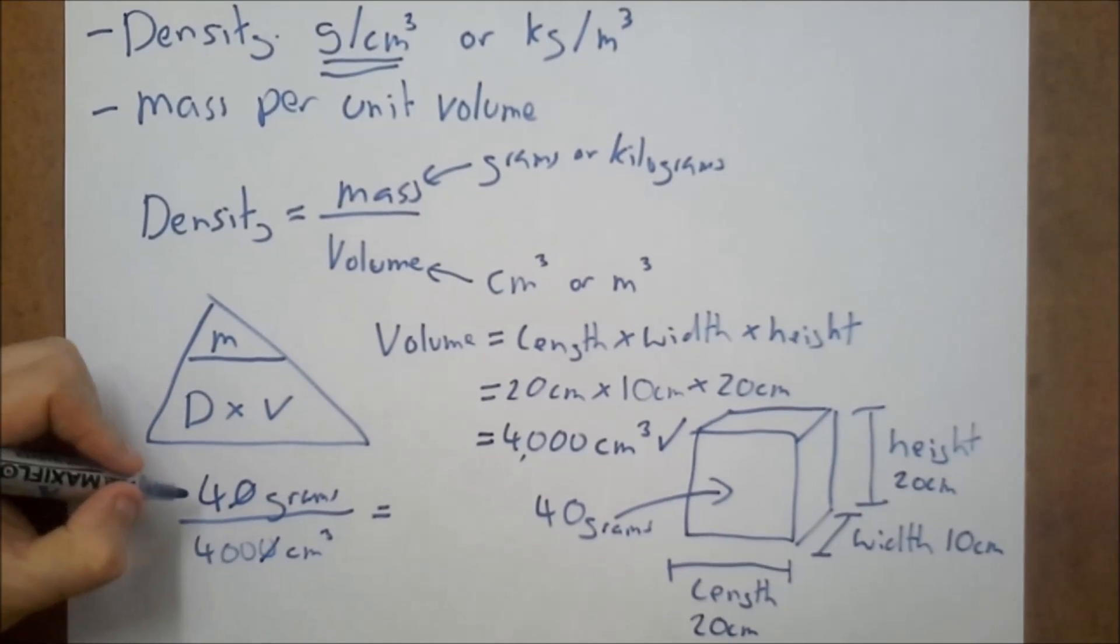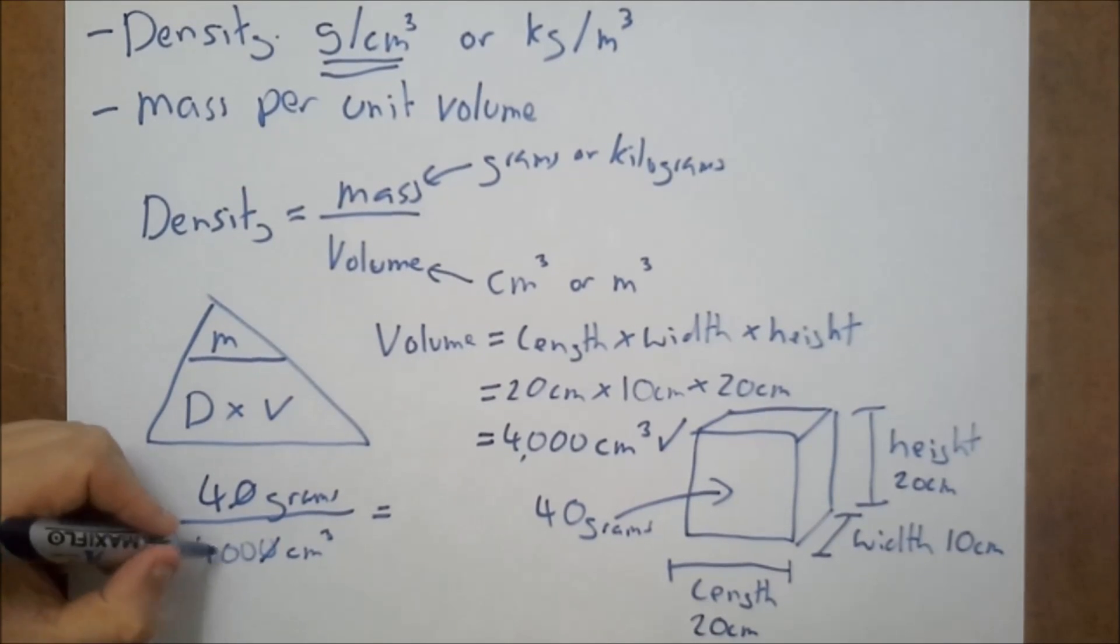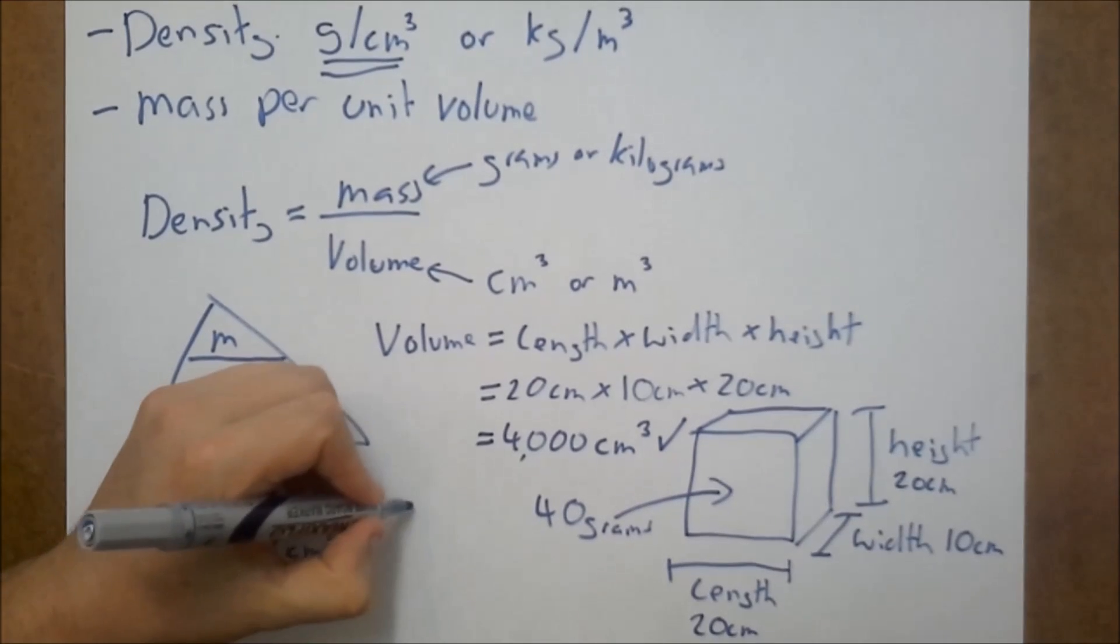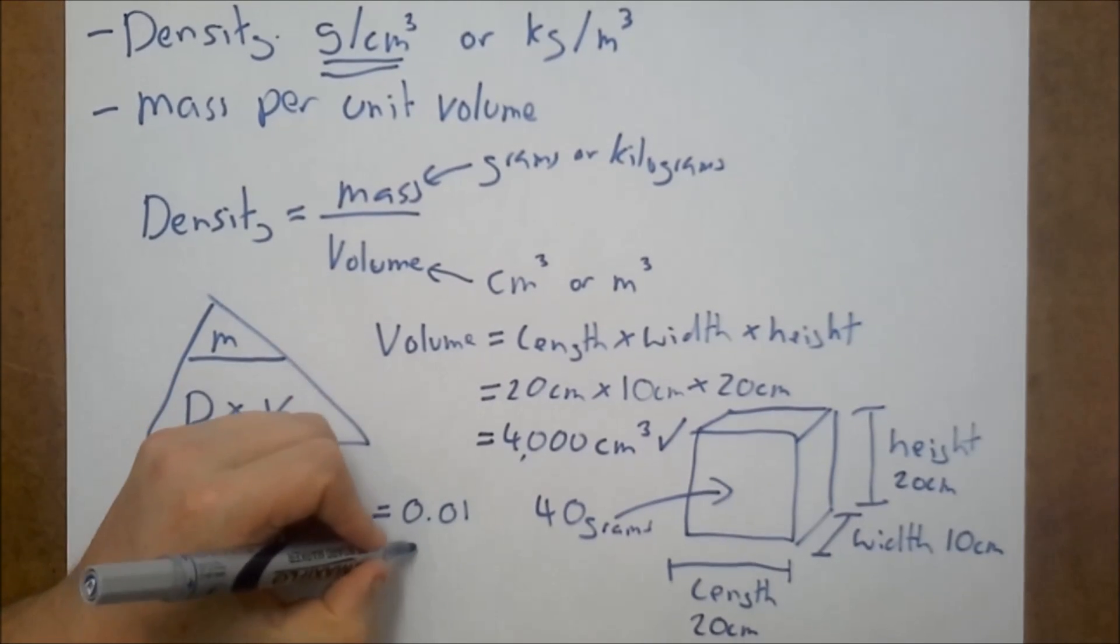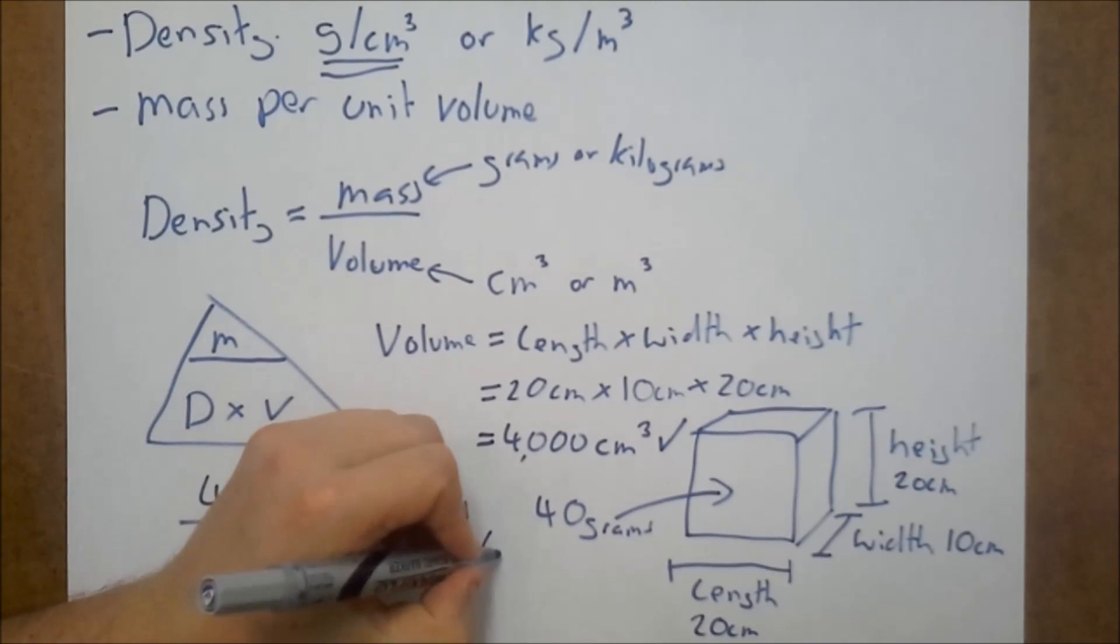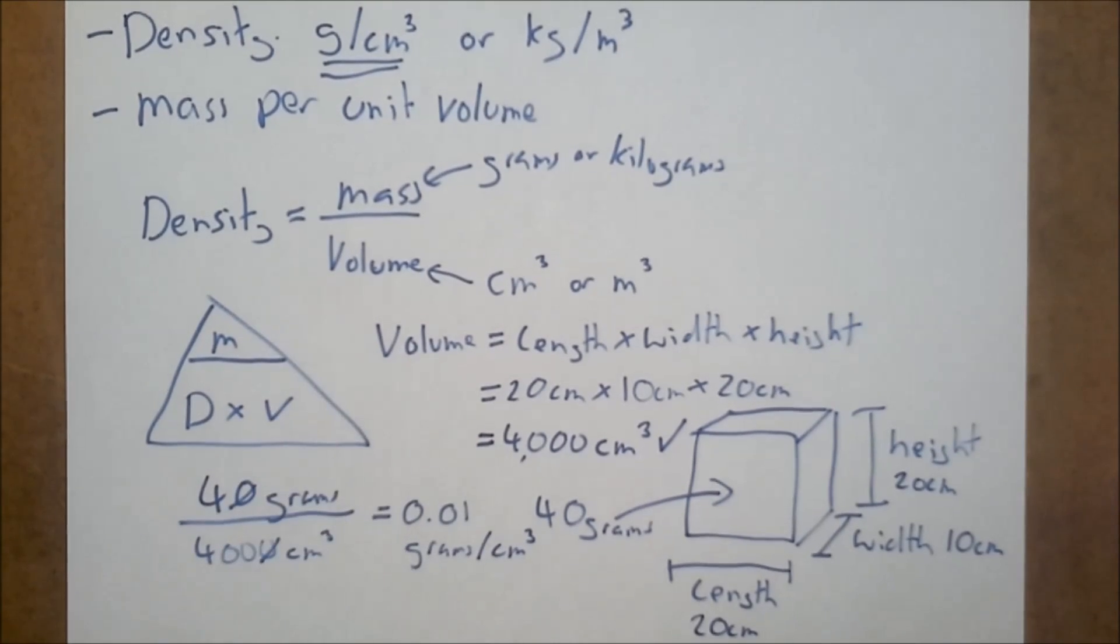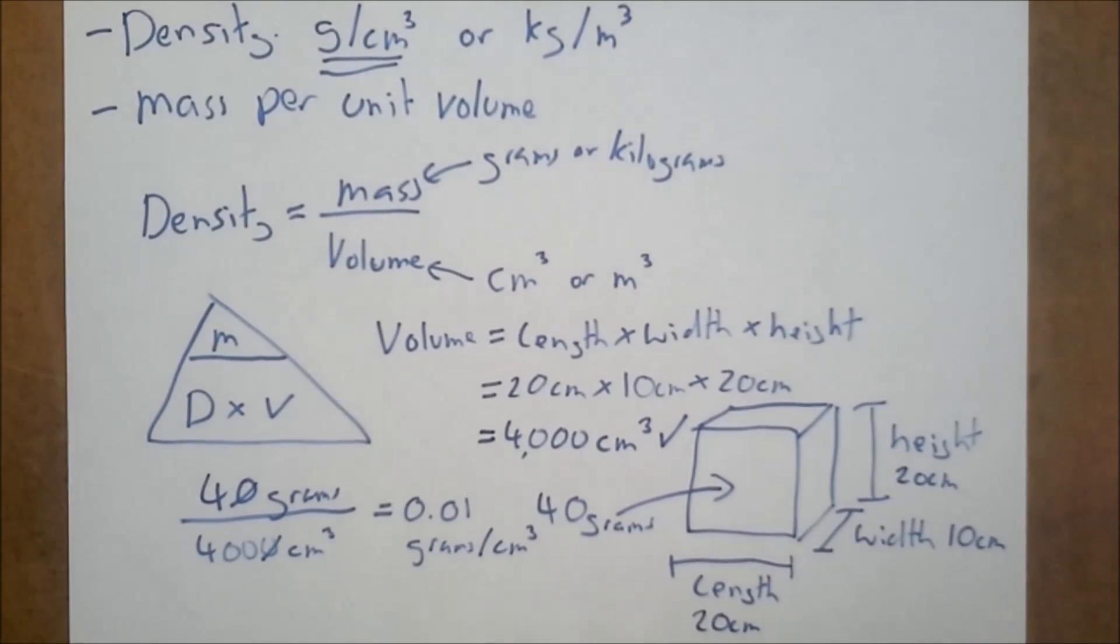Divided by 4000 centimeters cubed. So 400 divided by 4000, we're going to get 0.1 grams per centimeter cubed. That's how you find the density of a regular solid.